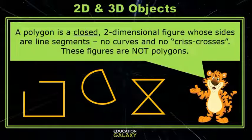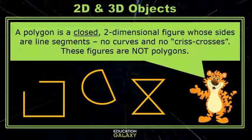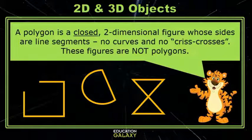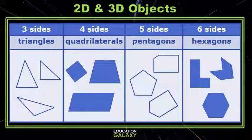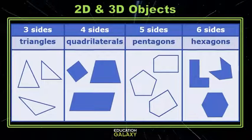Remember, a polygon is a closed two-dimensional figure whose sides are line segments — no curves and no criss-crosses. These figures are not polygons. Let's look at some examples and some special names of different polygons.